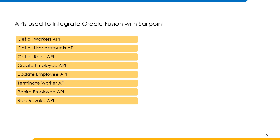GetAllUserAccounts API fetches all the user accounts. We may need to manage user accounts for the workers to assign or revoke fusion roles. GetAllRoles API is used to get the roles assigned to the user accounts.